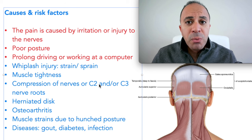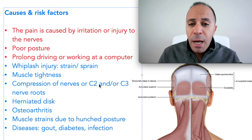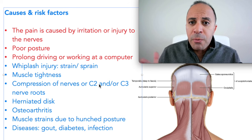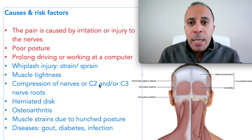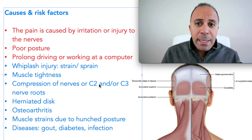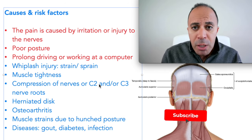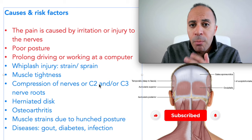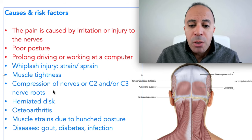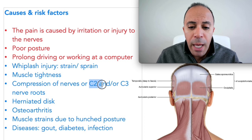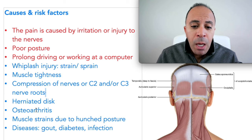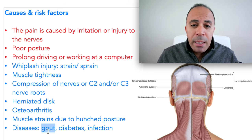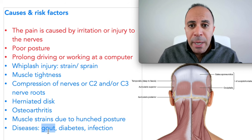Poor posture is a very common risk factor, including prolonged driving and working in front of a computer without maintaining proper posture. Another risk factor is whiplash from accidents — motor vehicle accidents that strain this area, causing your body to build scar tissue, fascia restrictions, and tightness that compress the nerve. Compression of the nerve root at C2-C3, herniated disc, osteoarthritis in the neck, neck muscle strain, gout, diabetes, and infection are also risk factors.